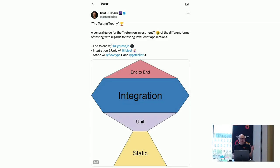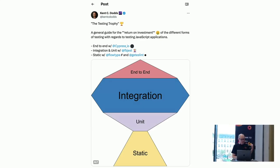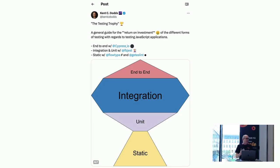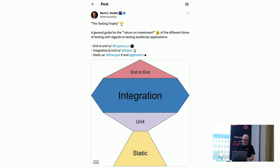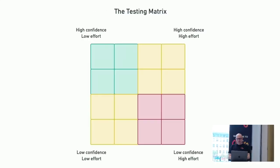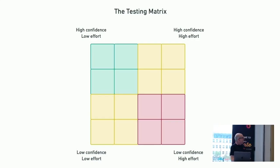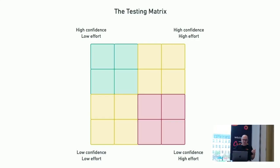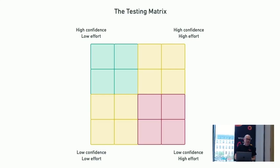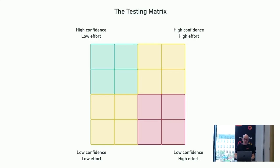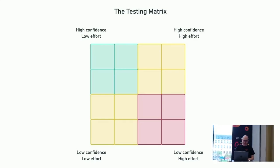Kent Dodds says: because you often don't have a lot of business logic to test, you only need a few unit tests. But the most part of your application tests would be integration tests, to make sure that database access and other things work. And then you have end-to-end tests on top. This relates to a testing matrix where the goal is high confidence with low effort.